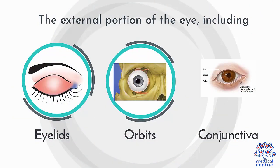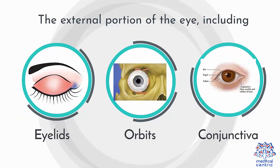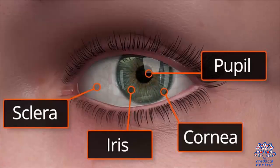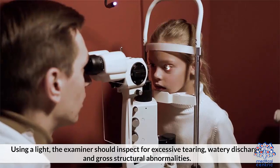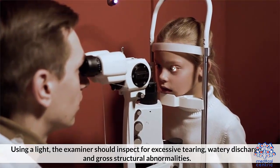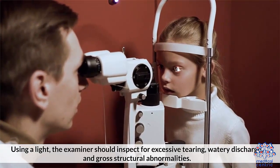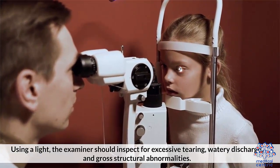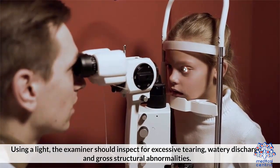The external portion of the eye, including eyelids, orbits, conjunctiva, sclera, cornea, and iris, should be examined. Using a light, the examiner should inspect for excessive tearing, watery discharge, and gross structural abnormalities.